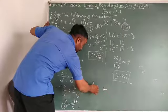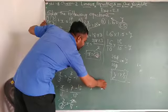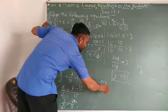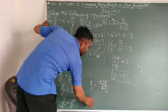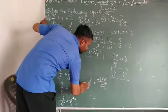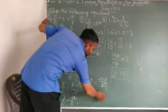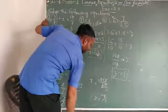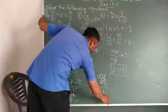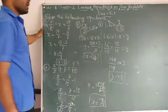So x = -8/15 × 3. 3 and 15 simplifies, so x = -8/5. This is the value of x. Okay?